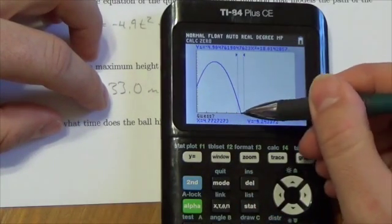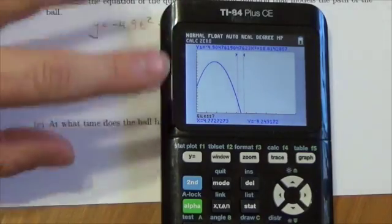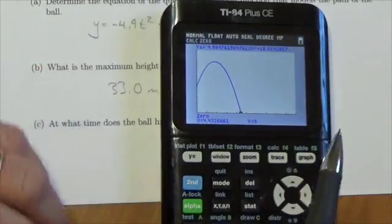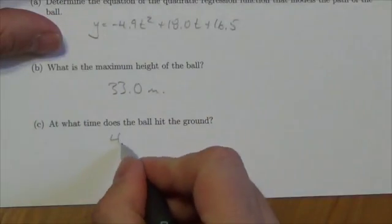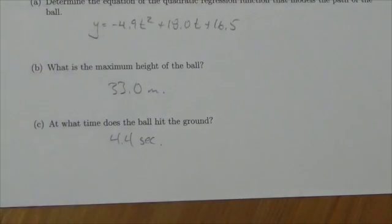You can see it's a little bit to the right of the x-intercept. It's waiting for me to press enter for the guess. I don't really care what the calculator makes as a guess. Press enter. And I get 4.4 seconds rounded to the nearest tenth. That's how much time it takes for the ball to hit the ground.